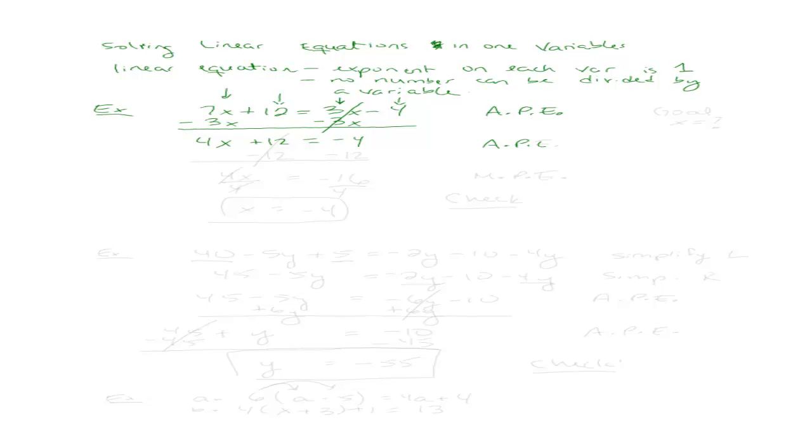I'm going to use the addition property of equality again to move that 12 over to the right because that 12 is mixed in with the variable x, which I don't want. I want the variable to be left alone because my goal, remember, is to get x equals some number. So when I do that my 12's cancel out and I'm left with a 4x equals negative 4 minus 12, which is negative 16.